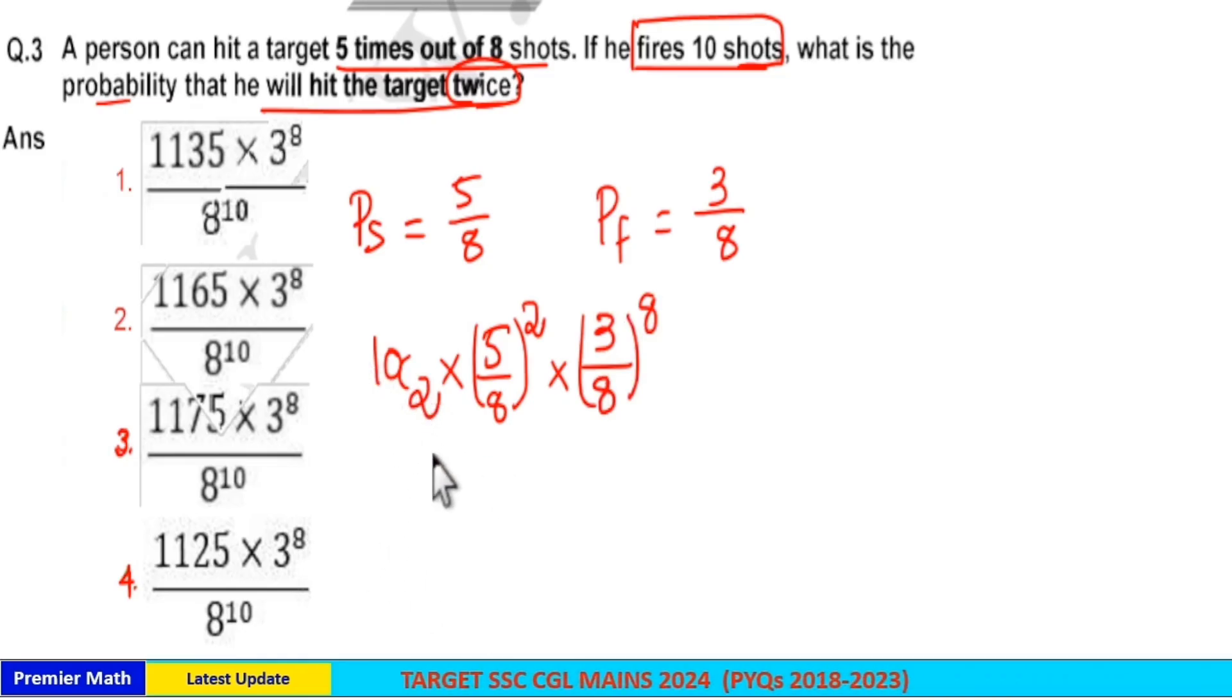Now 10C2 ways you can do this. So multiply all these together. This is your answer. So 10C2 means 9 into 10 by 2 which is equal to 45. So 45 into this is 5 square is equal to 25.